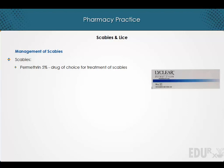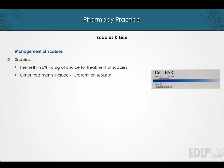The drug of choice for the treatment of scabies is permethrin 5%. Other treatments include crotamiton and sulfur. Oral ivermectin 200 micrograms per kilogram orally, repeated in two weeks, is an alternative regimen.